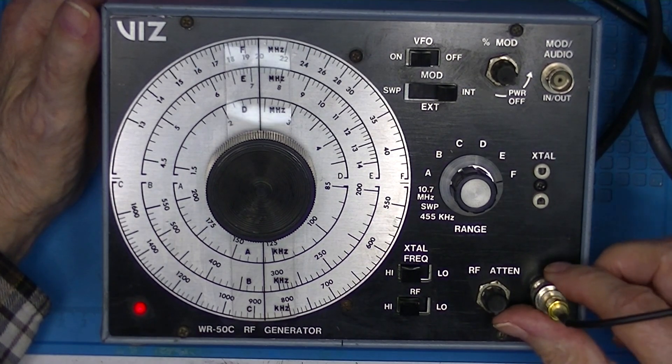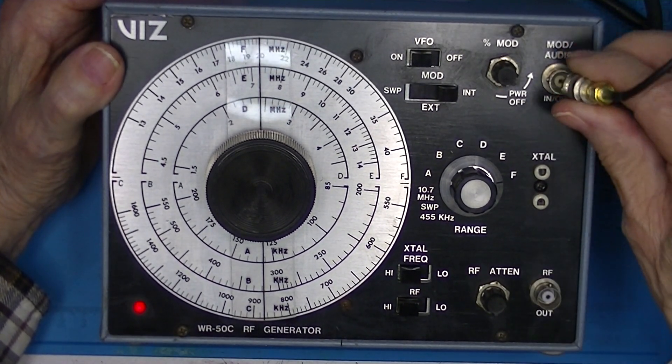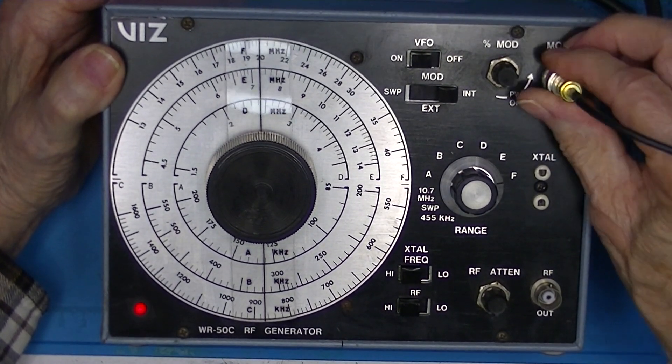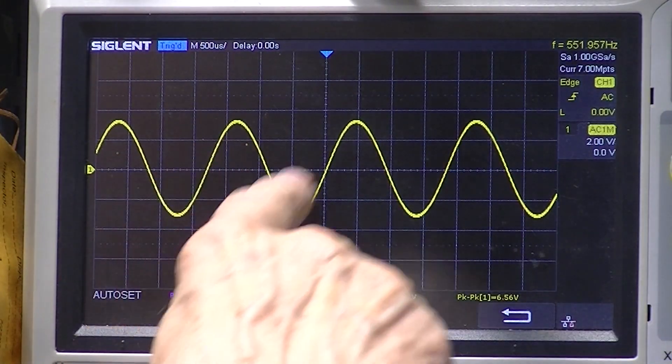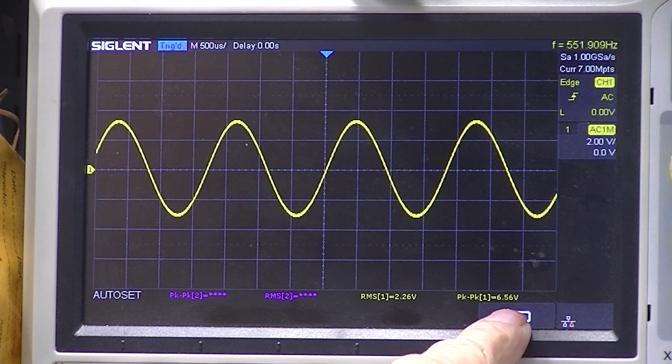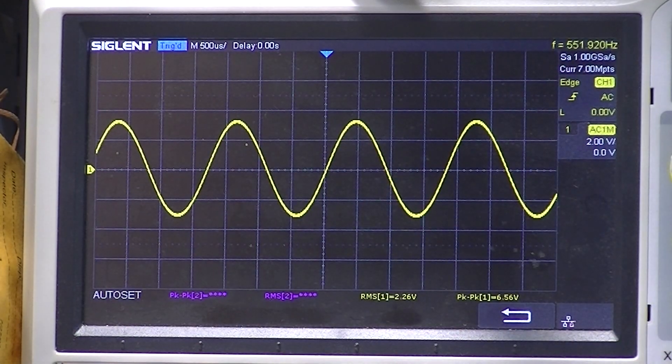I'll change this now and we'll look at the audio output. A nice looking sine wave, 6.5 volts peak to peak. And 551, 552 hertz. So that's pretty close to the advertised 600.